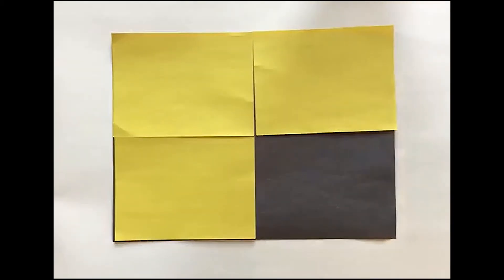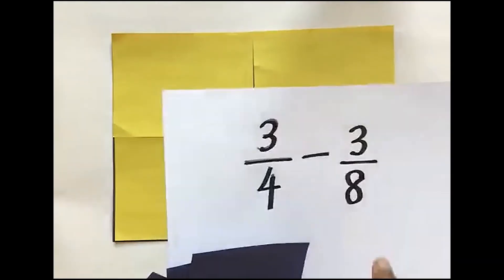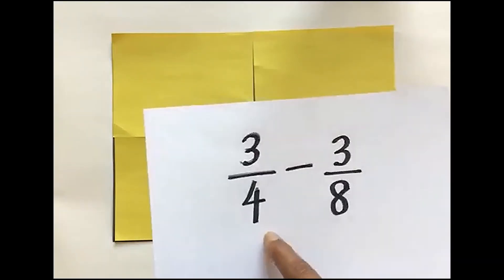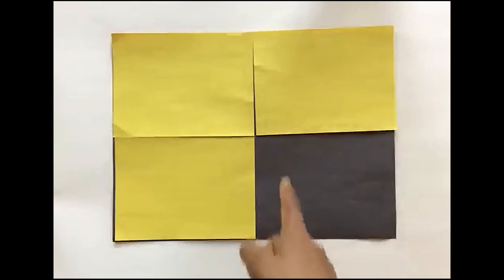Now, as you can see, I need to remove 3 eighths from 3 fourths. Since I don't have the eighths in here, I'm going to find equivalent fractions for my fourths.